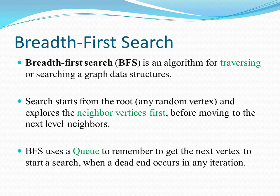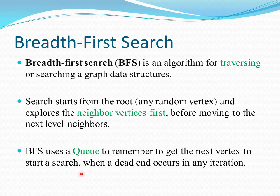In this session I'm going to share about how Breadth-First Search, or BFS, works. BFS is an algorithm for traversing or searching a graph data structure. The search starts from the root and explores neighbor vertices first before moving to the next level of neighbors. Here, root means any random vertex where you want to start a search. BFS uses a queue to remember the next vertex to start a search when a dead end occurs in any iteration.